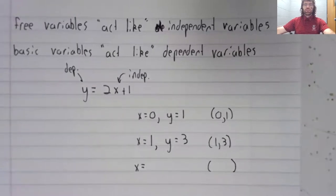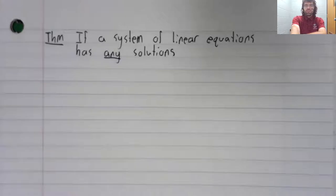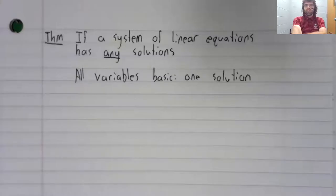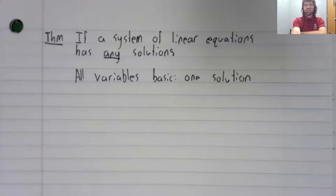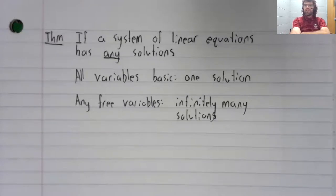And now, back to linear algebra. If a system of linear equations has any solutions, it has either one solution or infinitely many based on the following. If all of the variables are basic variables, there is one solution. If there are any free variables, there are infinitely many solutions.